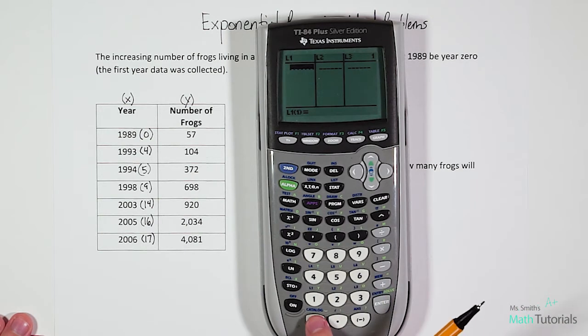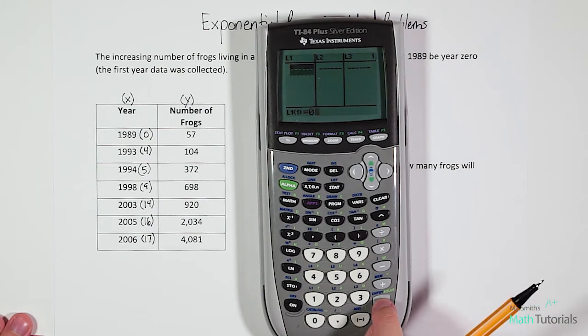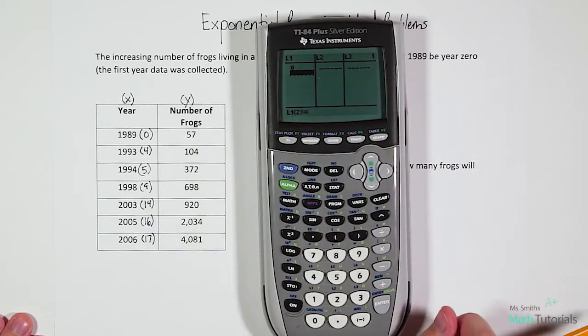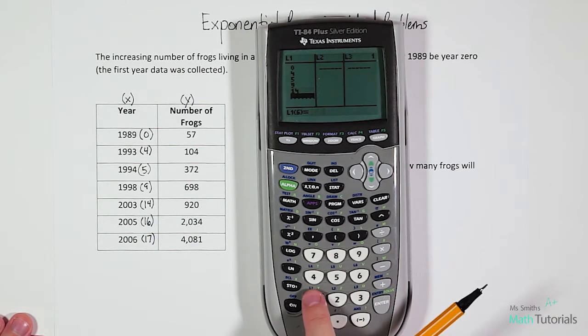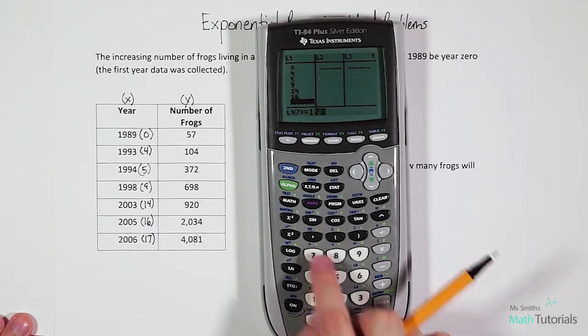We're going to go ahead and put our year values into our X column, which will be our list one. So all you have to do is type in zero first. And then if you hit enter, it jumps down. Type in four, five, nine, 14, 16, and 17.